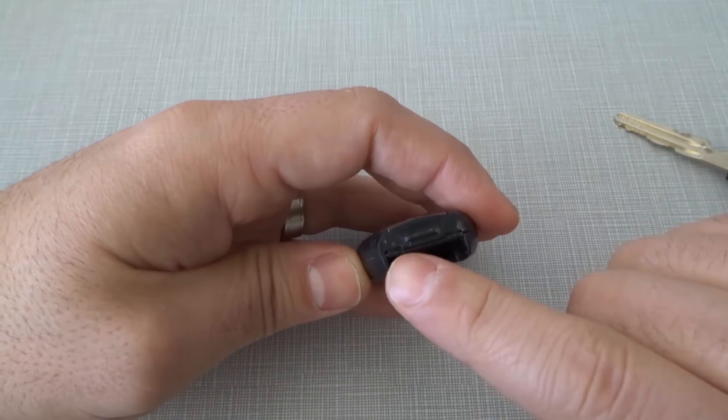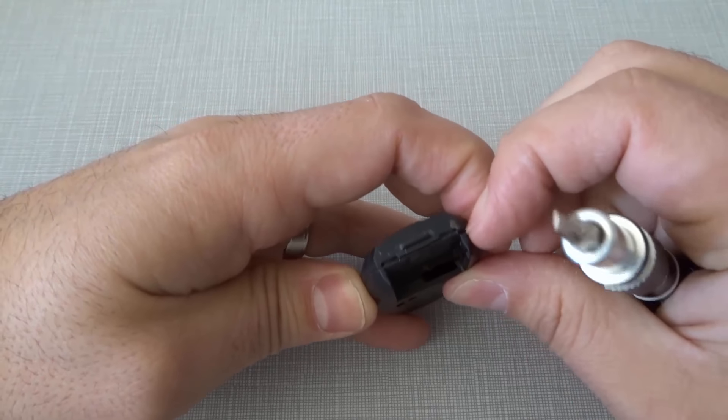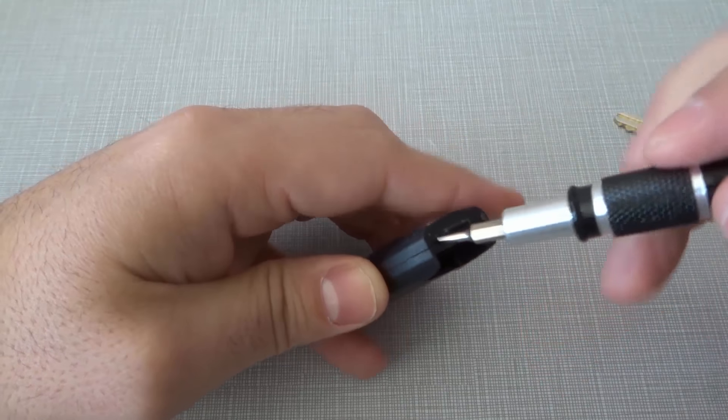If you take a look right here, there are these two little slots. Now on this key fob, this one is a little bit broken so I'm not going to use this one, but you can use either of these slots to open it up. I'm just going to use this one on the left.